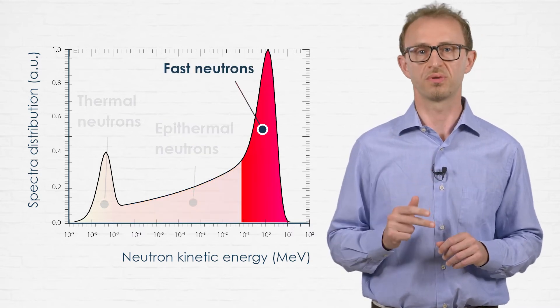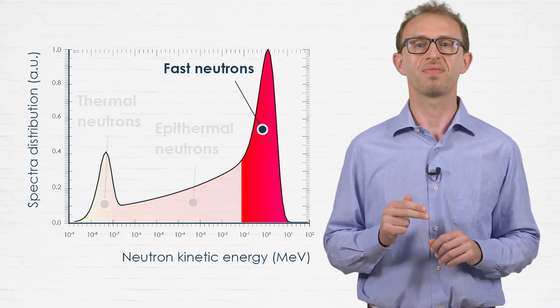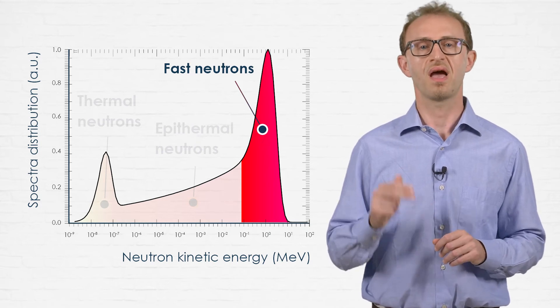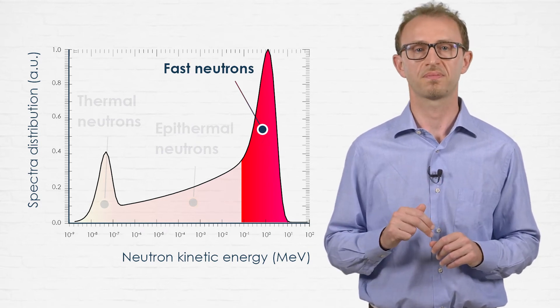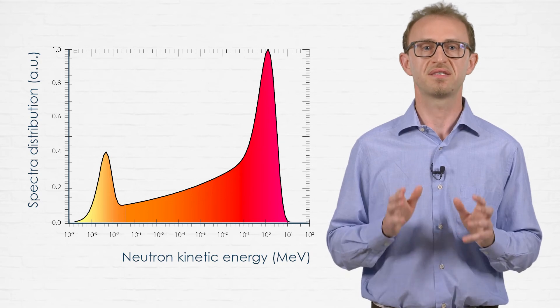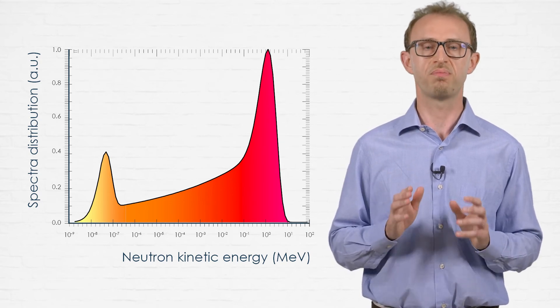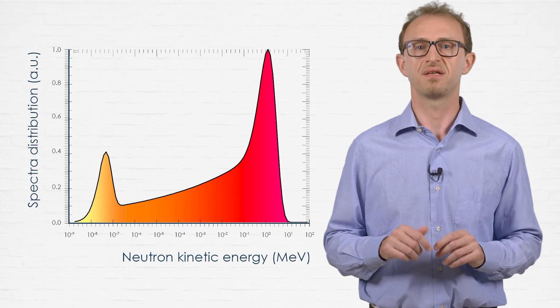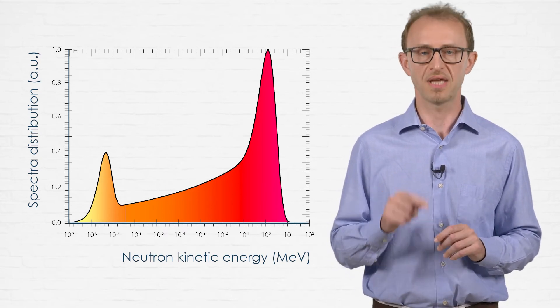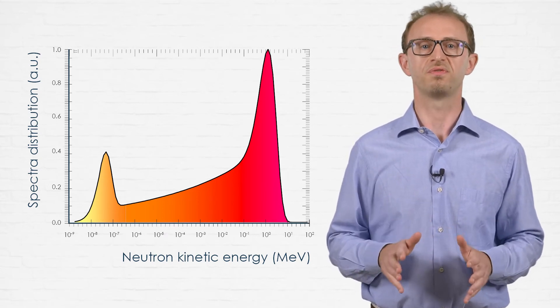and fast neutrons with energies higher than 100 keV up to 20 MeV. Each class has its own physical features and processes, features and processes that are exploited also to detect and measure the neutron field.